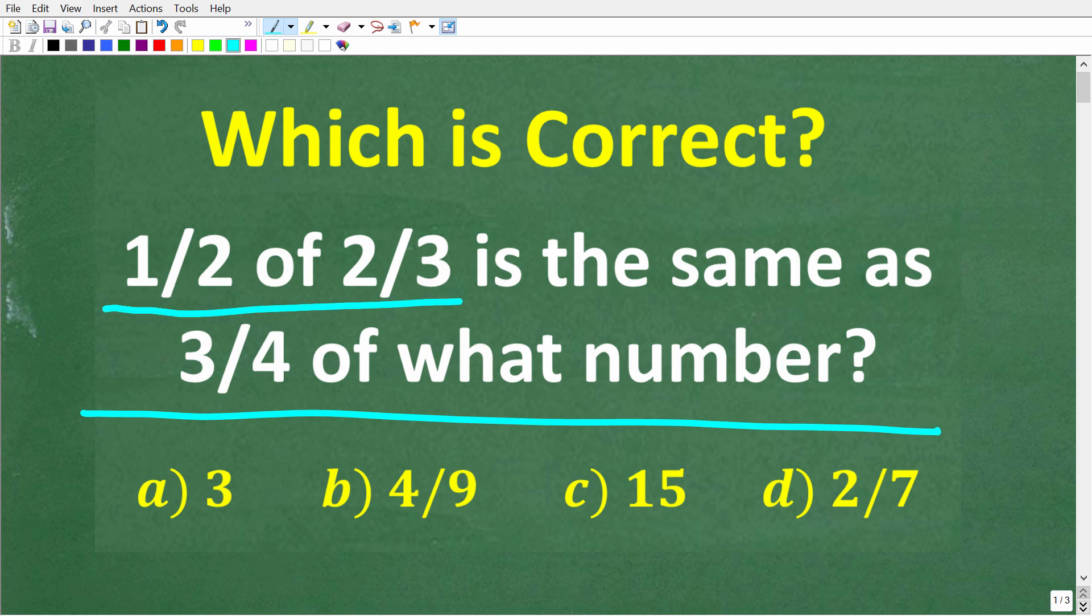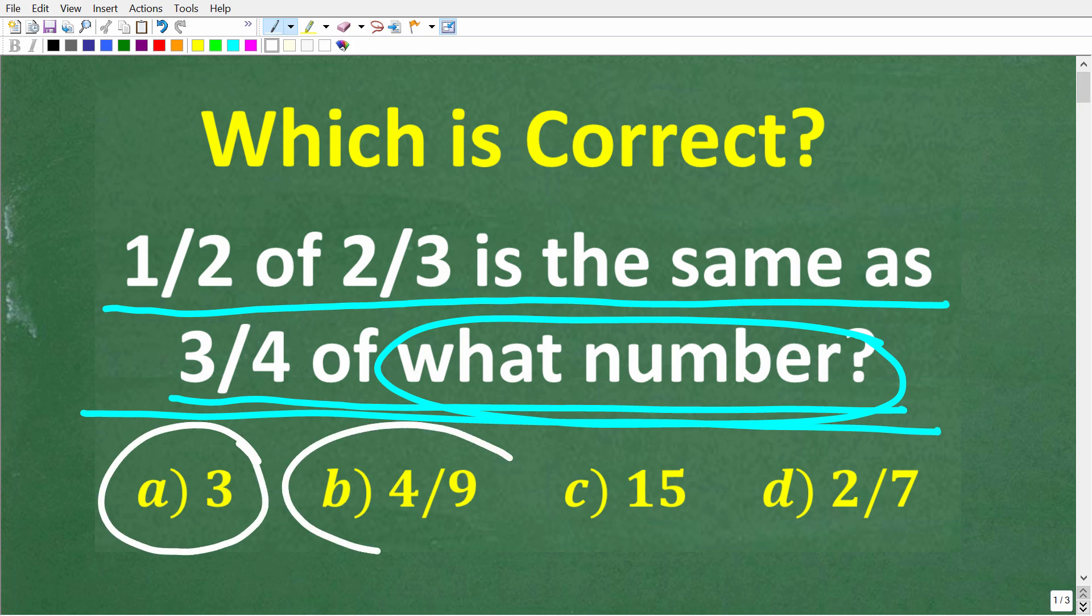One half of two thirds is the same as three fourths of what number? So we're looking for this number. That is the problem, but we do have a multiple choice question here. Let's take a look at our answers. A is three, B is four ninths, C is 15, and D is two sevenths.